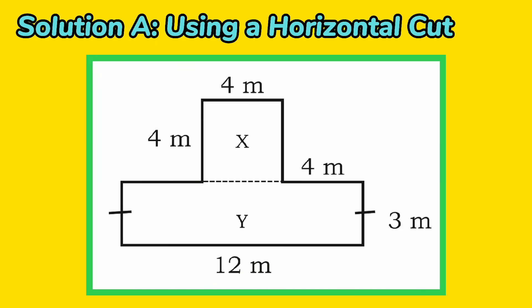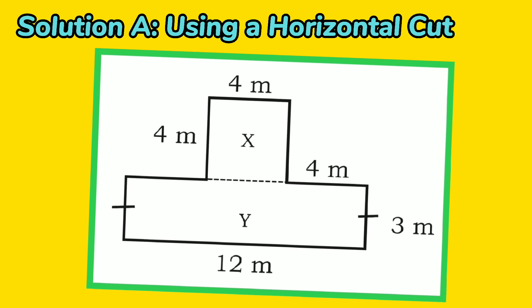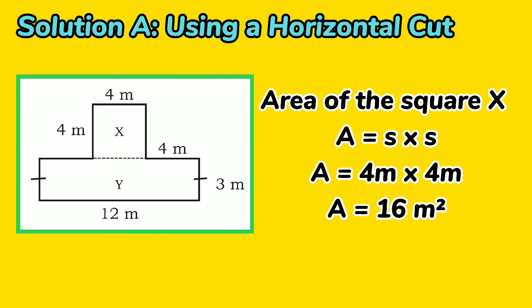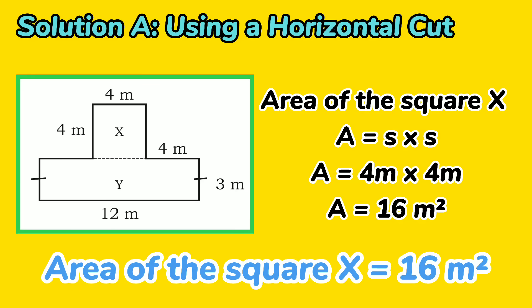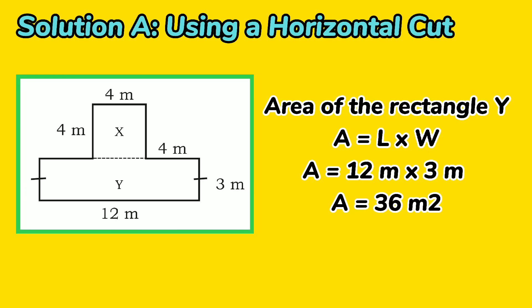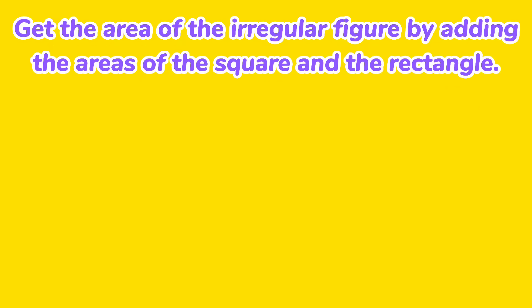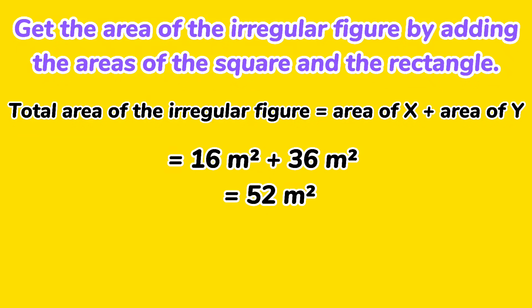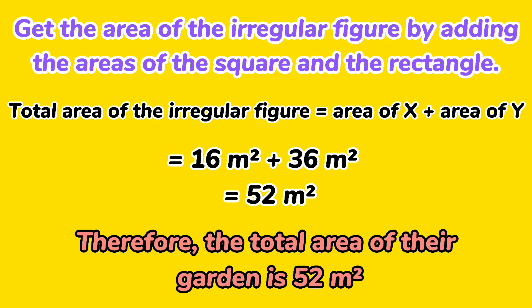Then, find the areas of the square and the rectangle. Let's first solve for the area of the square. The given number is 4 meters. So, area equals S times S equals 4 meters times 4 meters, which gives you 16 square meters. Let's now solve the area of the rectangle. The numbers given are 12 meters and 3 meters. So, area equals L times W equals 12 meters times 3 meters, which gives you 36 square meters. Now, to get the area of the irregular figure, add the areas of the square and the rectangle. Therefore, the total area of their garden is 52 square meters.